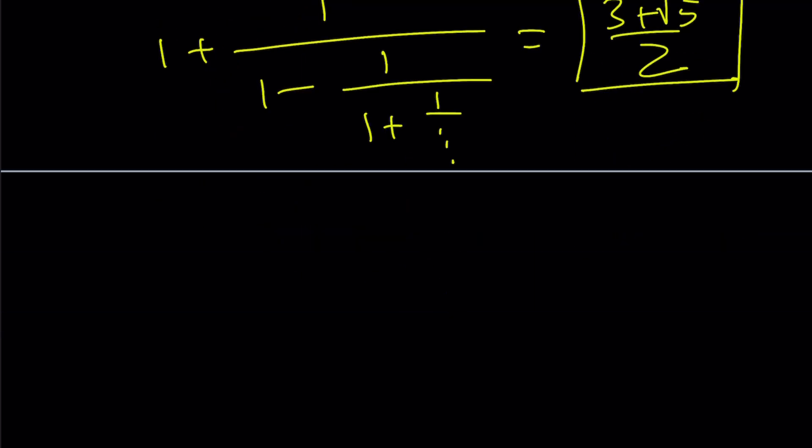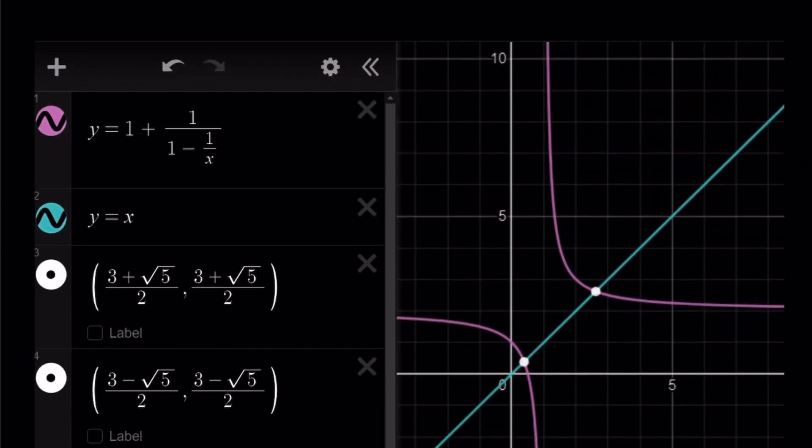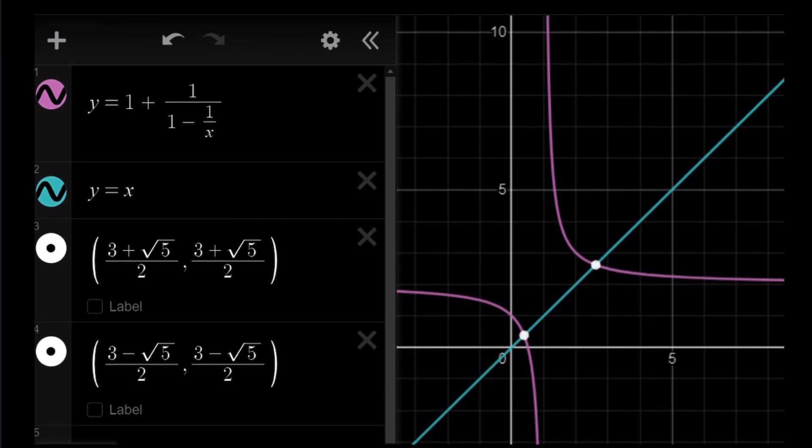Let's take a look at the graph real quick. Here's our graph of the expression. Remember, we set up an equation at the beginning and y equals x, which is what we set it equal to. And you get two intersection points, which are the two roots, but we're going to go with the positive one. And this brings us to the end of this video.